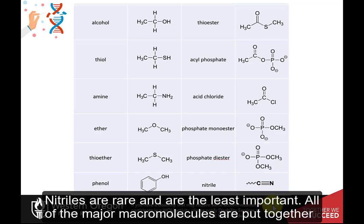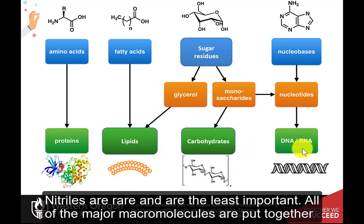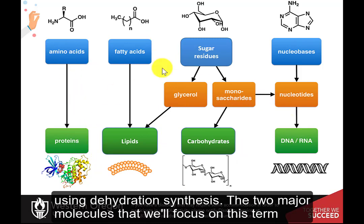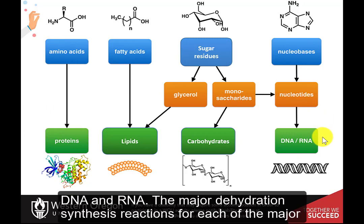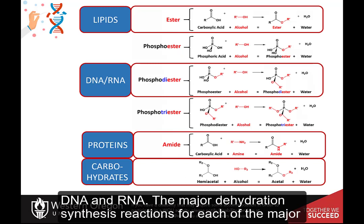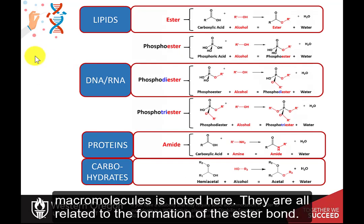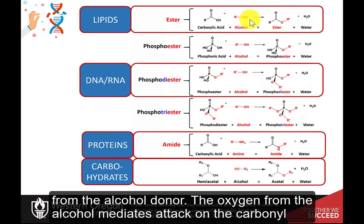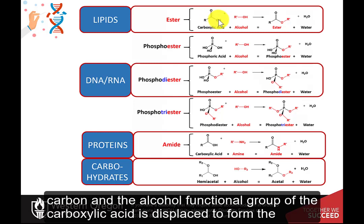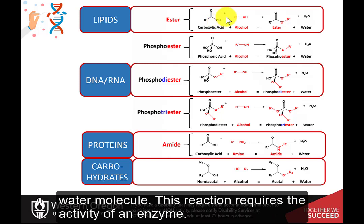Nitriles are rare and are the least important. All of the major macromolecules are put together using dehydration synthesis. The two major macromolecules that we will focus on this term are the proteins and the nucleic acids, DNA and RNA. The major dehydration synthesis reactions for each of the major macromolecules are noted here. They are all related to the formation of the ester bond with the loss of the hydroxyl from the carboxylic acid functional group and a proton from the alcohol donor. The oxygen from the alcohol mediates attack on the carbonyl carbon and the alcohol functional group of the carboxylic acid is displaced to form the water molecule.